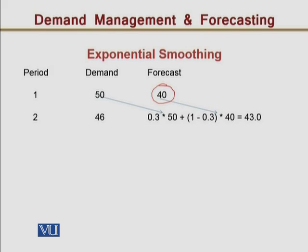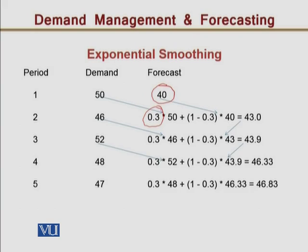We have used alpha equal to 0.3, so 1 minus alpha is 0.7. The forecast for period 2 comes out to 43. Similarly, for period 3, the forecast of 43 and the actual demand of period 2 which is 46 are used to determine the forecast for period 3, which is 43.9. And so on, we get the forecast for each period.